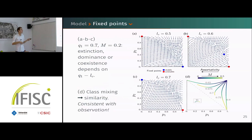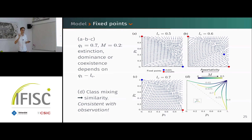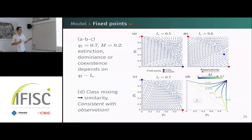Panel d shows how the stable fixed point moves in the p_1–p_2 space for different values of q_1 as we increase the value of m — in other words, decrease the assortativity. The more we increase this mobility, the more we return toward the dashed line corresponding to p_2 equals one minus p_1. So the more mixing, the more linguistic differences are smoothed out, which is consistent with our observations.